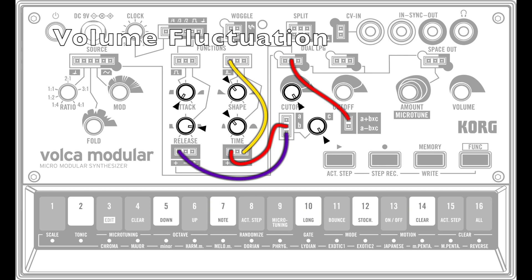If the function 2 positive output was connected directly to the LPG1 level input, the sound would be constantly audible with the volume fluctuating from maximum to minimum. However, because it's passed through the utility ABC module, the function 2 wave moves within the range of the function 1 signal, which is the main volume envelope. This is because the formula A plus B times C is applied, in which A is not connected and therefore is 0, B is the function 2 wave, and C is the function 1 signal. So the formula can be simplified as B times C.